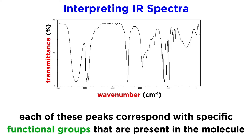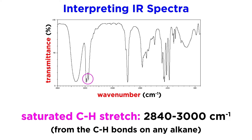There are peaks that we will see over and over again, so let's simply list what they are, give the associated wave numbers, and discuss other characteristics when necessary. For alkanes, an IR spectrum isn't too interesting, since all we have is the saturated CH stretch and the CC stretch. Most organic compounds have these bonds, so these peaks will show up almost all the time.